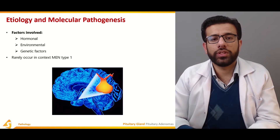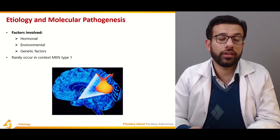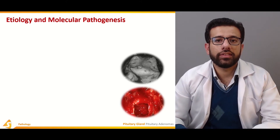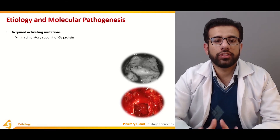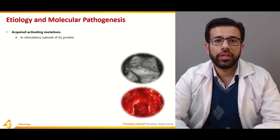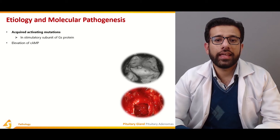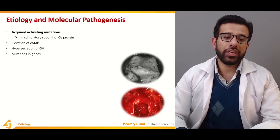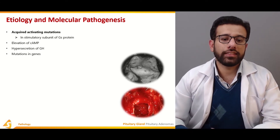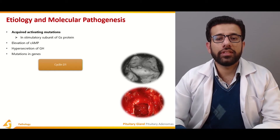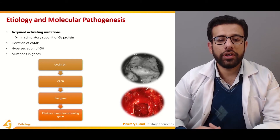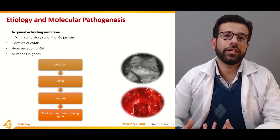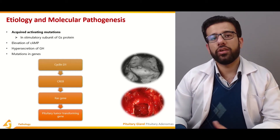One major type is pheochromocytoma, which involves multi-glandular involvement in the patient, but it is rare. There are also acquired activating mutations of the stimulatory subunit of the G protein gene, which can lead to elevation of cyclic AMP, hypersecretion of growth hormone, and other mutations in genes such as cyclin D1, RAS, and the pituitary tumor transforming gene, all contributing to the molecular pathogenesis and etiology of the adenomas.